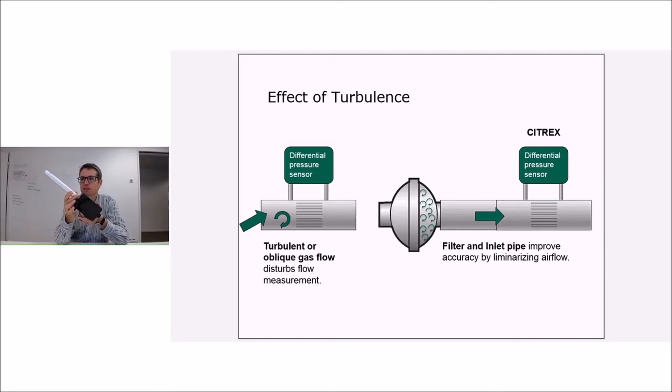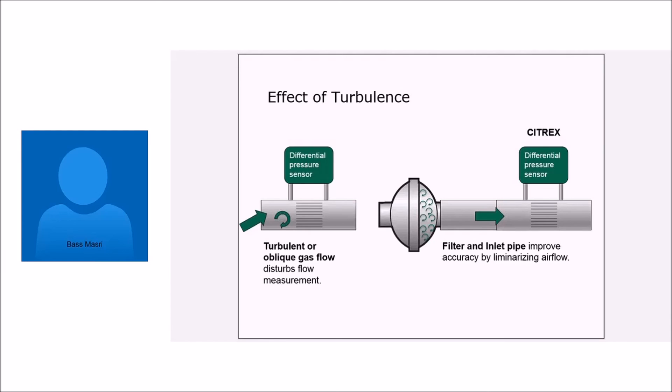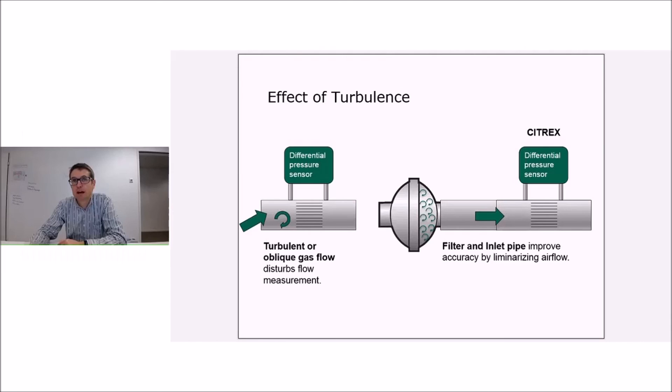They create a micro turbulence which takes away the big one, and the micro turbulence calms down as you can see here on the right side. That will calm down through the inlet of the PF300 or the inlet tube of the Citrex.